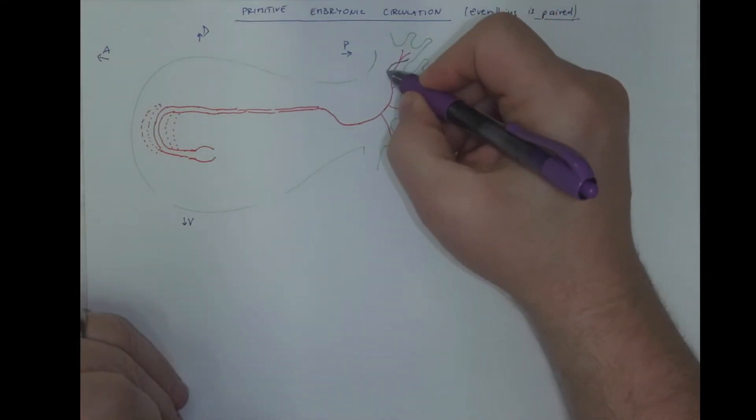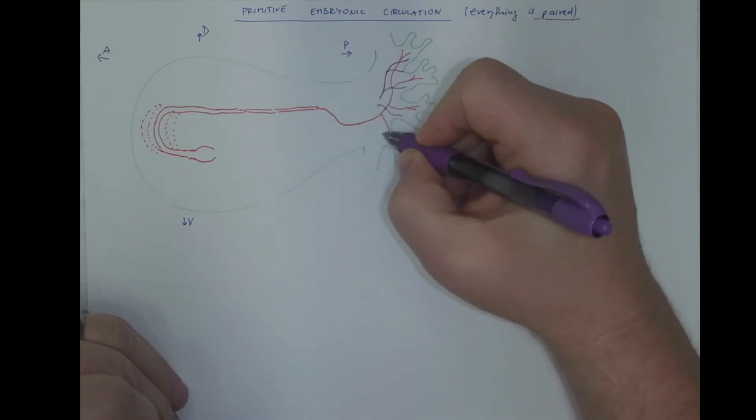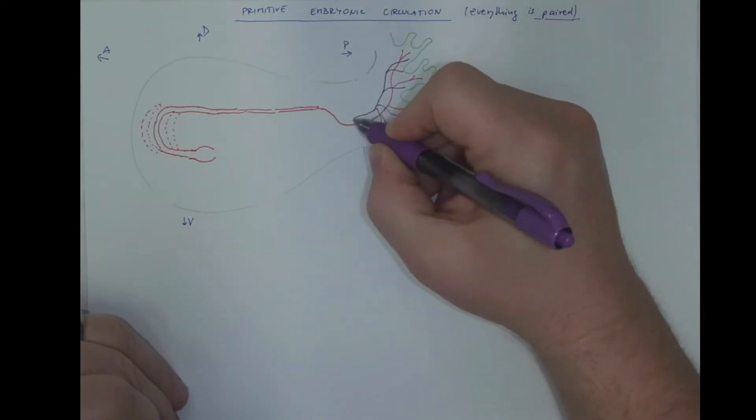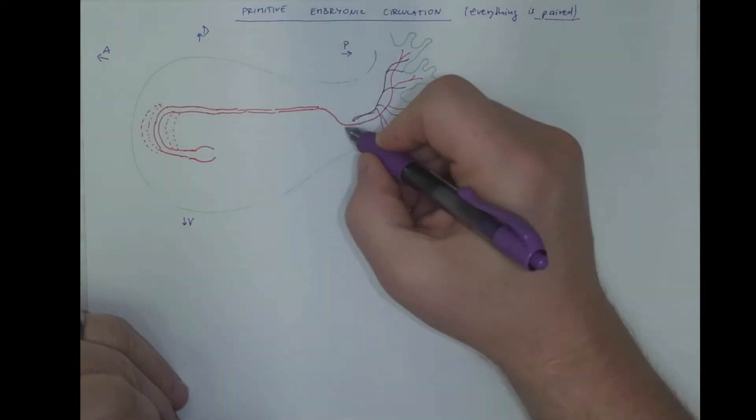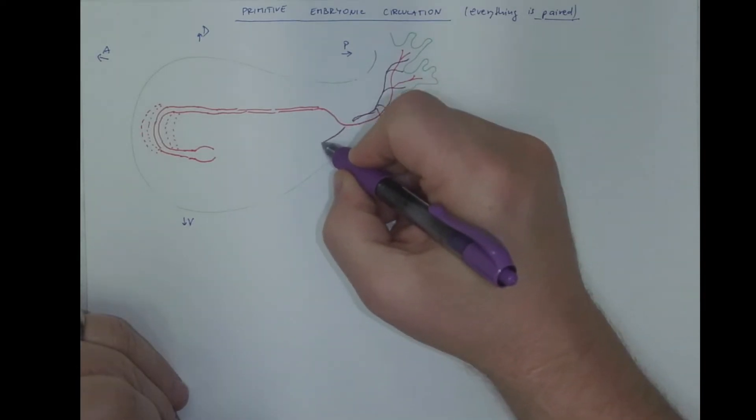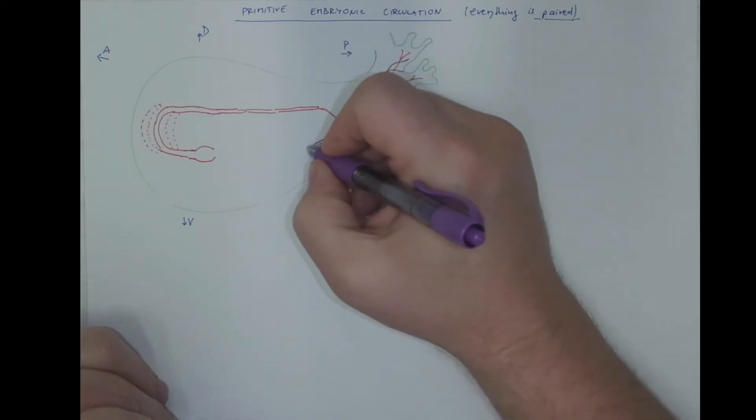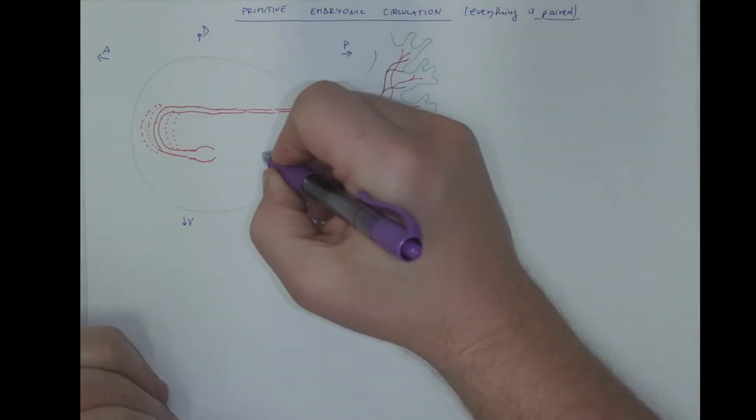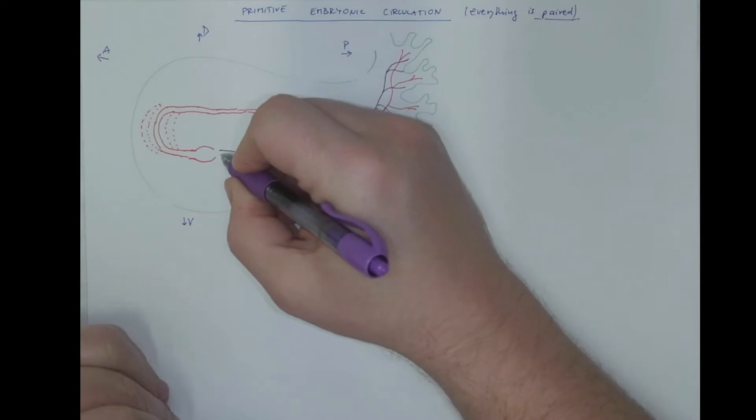The blood is collected by veins, merge into a vein that carries the blood back through the connecting stalk into the embryo. This is the umbilical vein. The umbilical vein is a tributary to the heart.